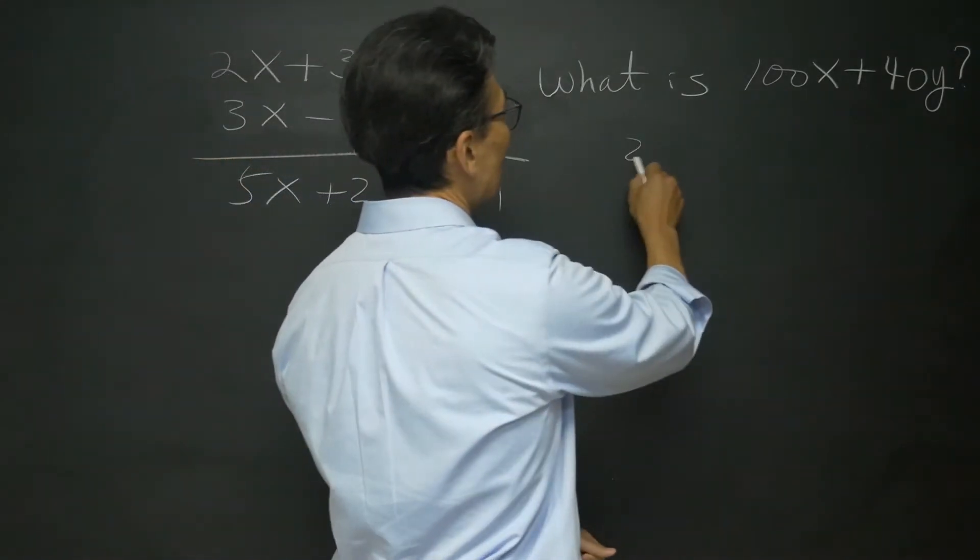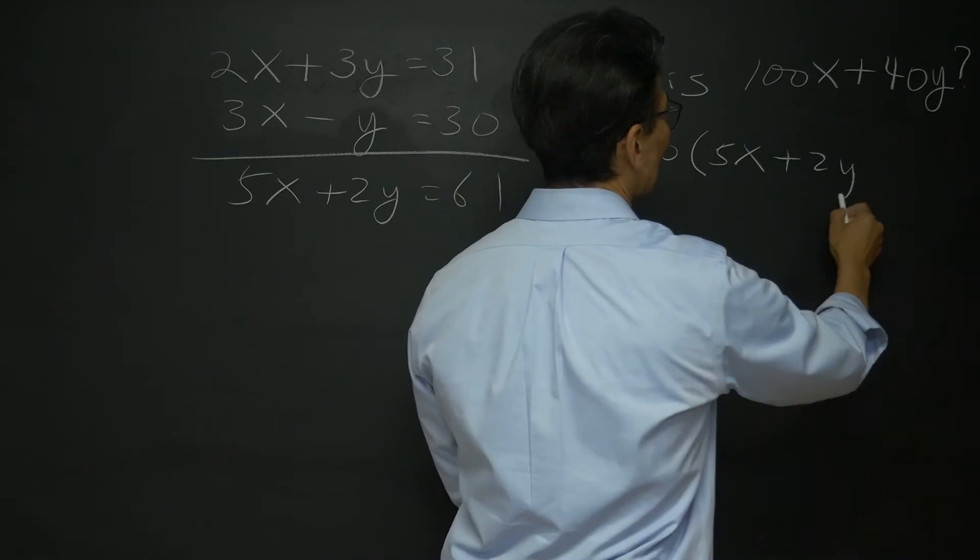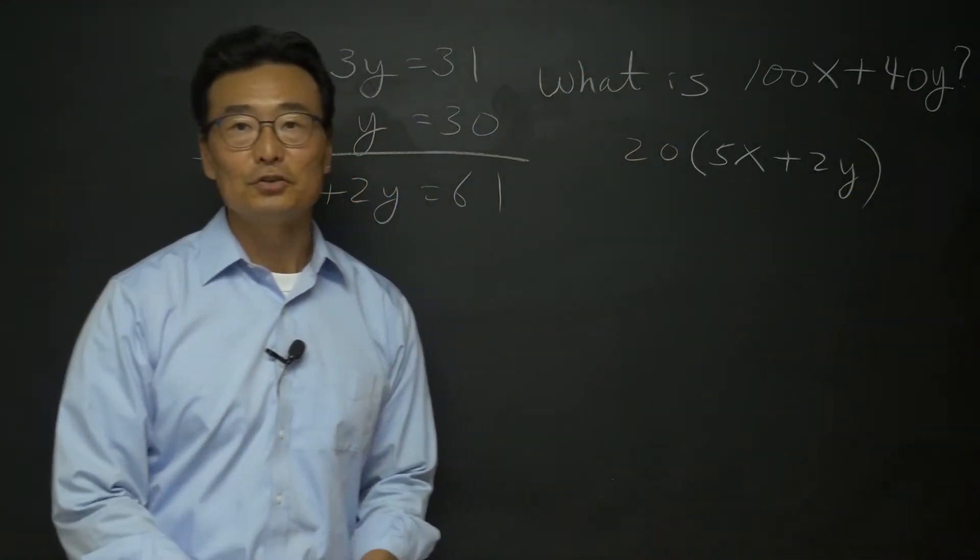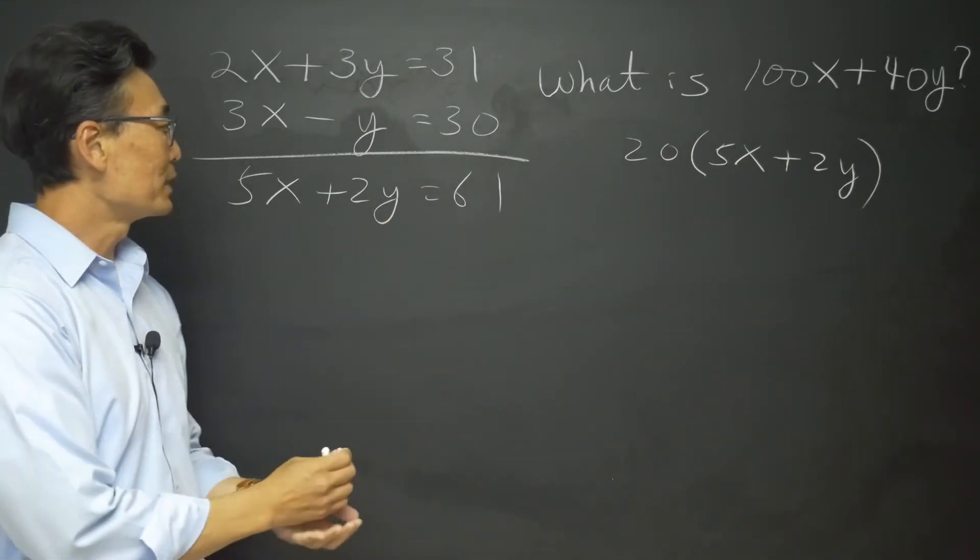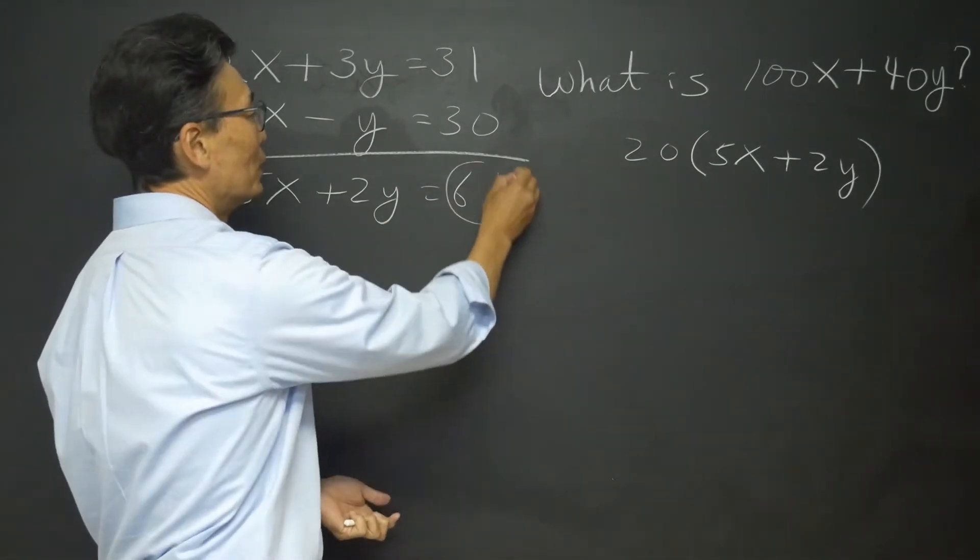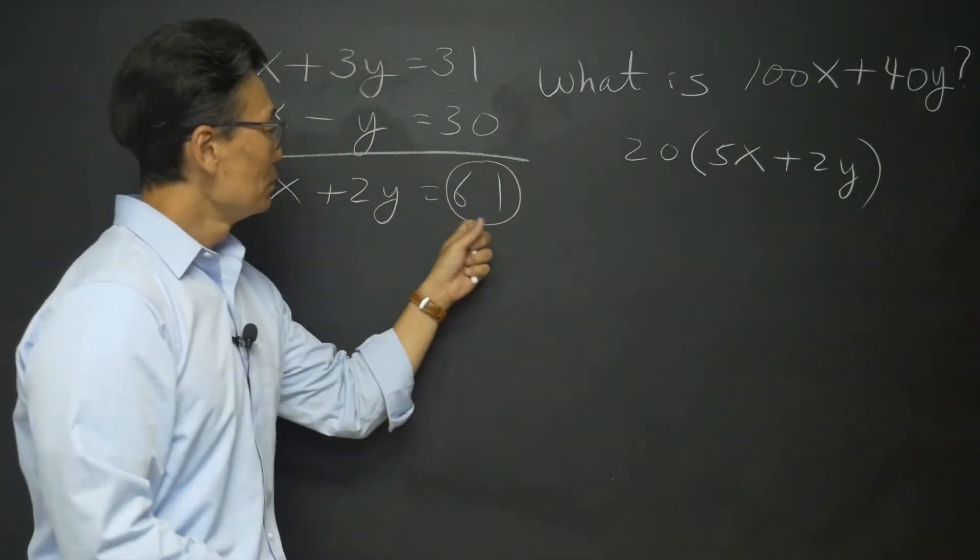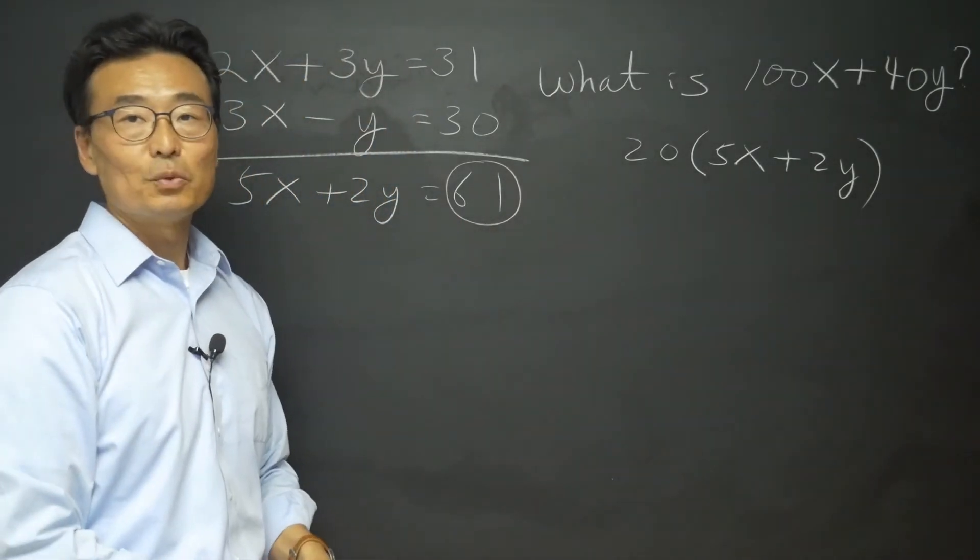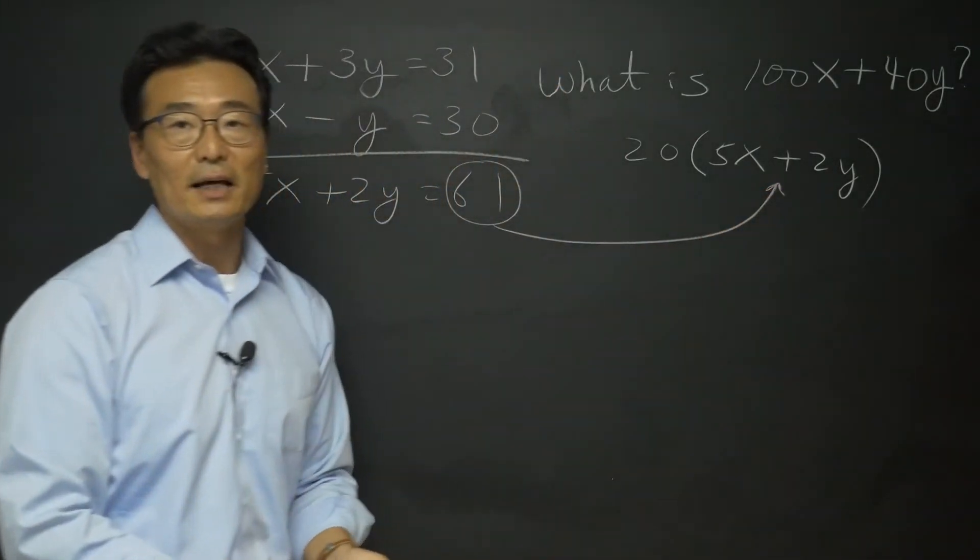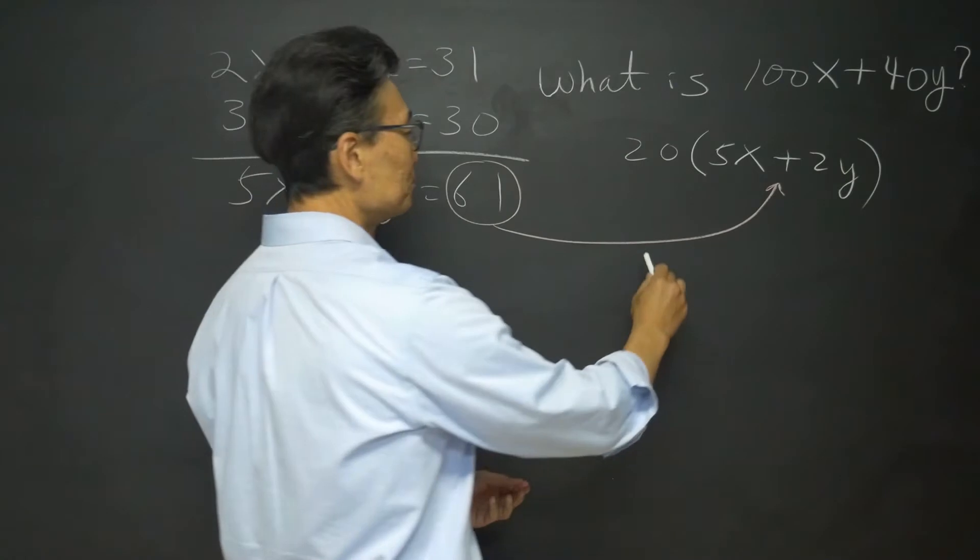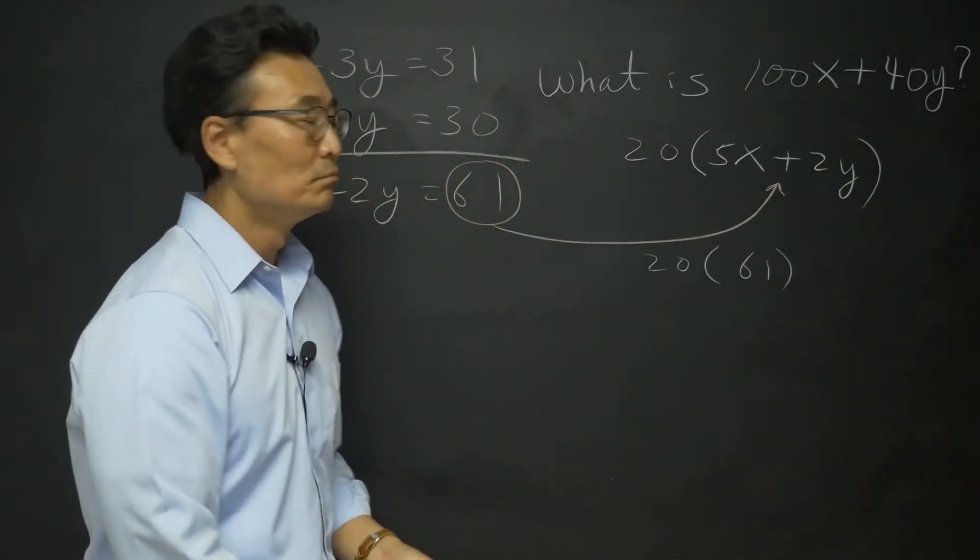Time to do a quick substitution. See that 5x plus 2y here? It's equal to 61, and we have that 5x plus 2y, so we can take that 61 and substitute it or plug it in to that and replace that. So we end up getting 20 times 61.